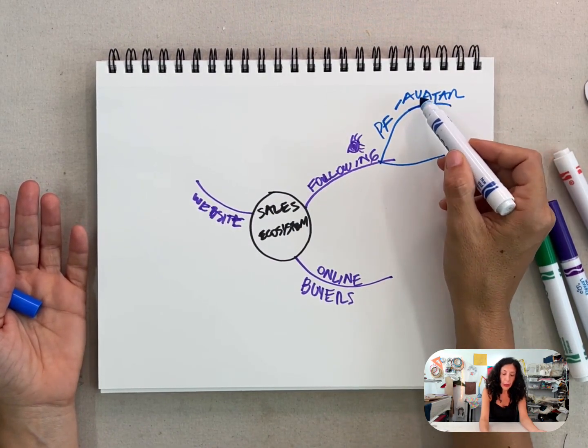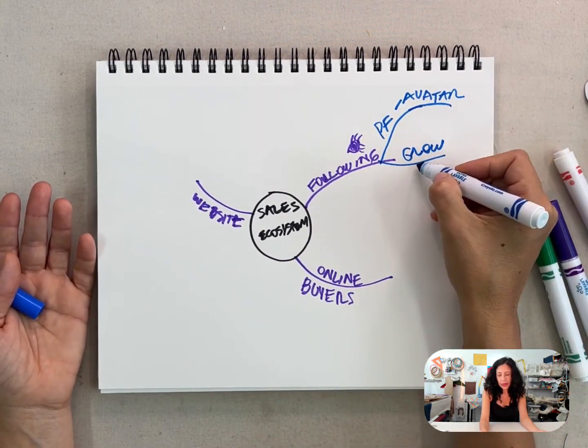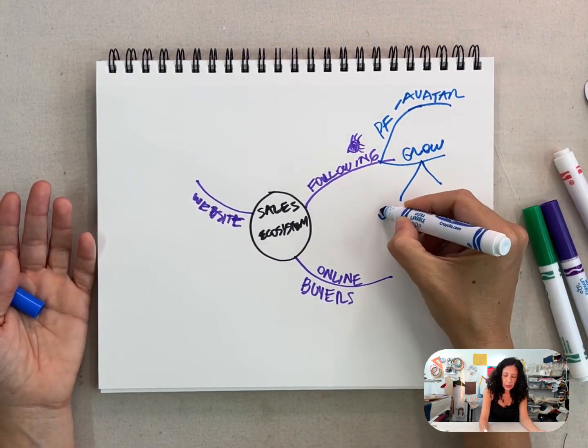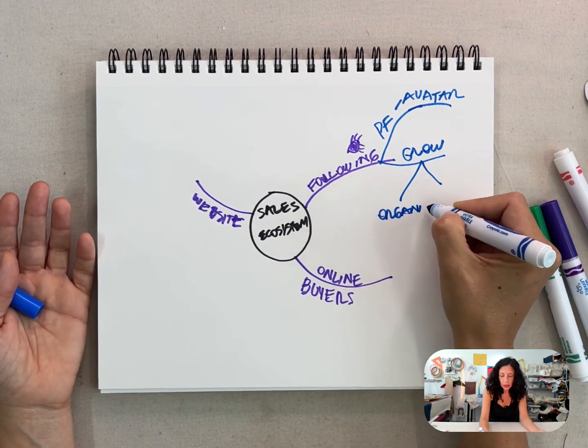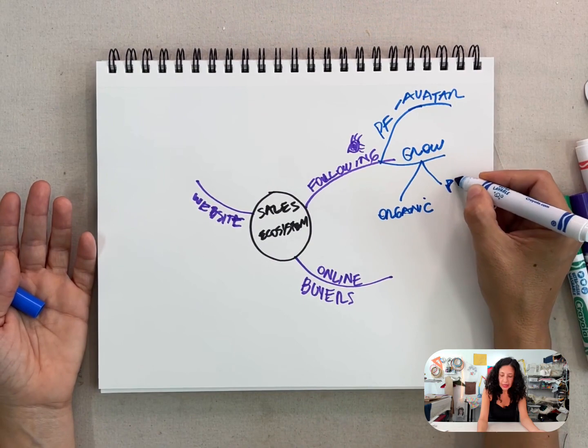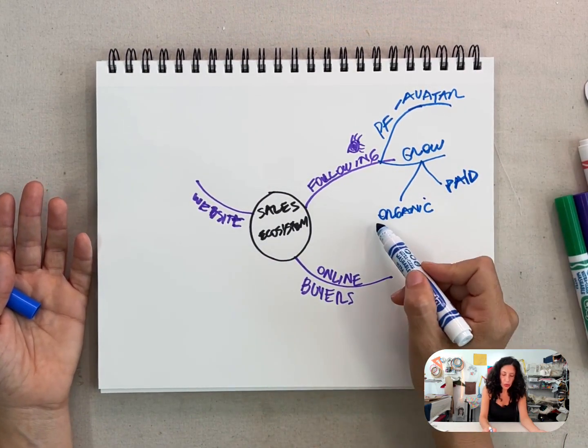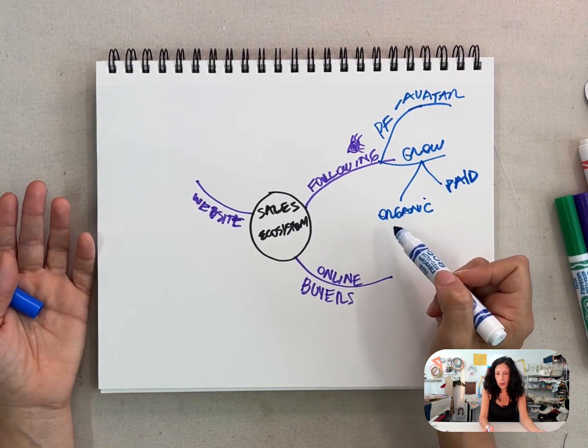So not only you have to find out who is the right group, but also you have to grow. Every day should be growing. And then there are two ways to grow. One is the organic way, which is the way most of us do. And then there is the paid way.